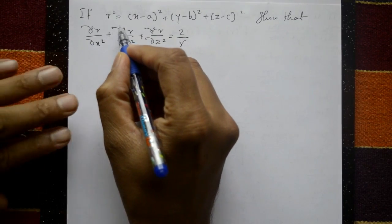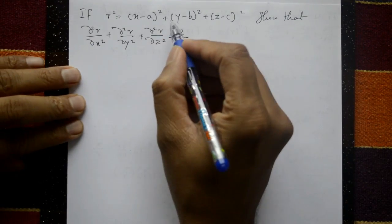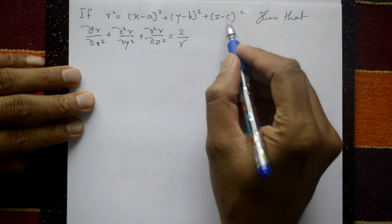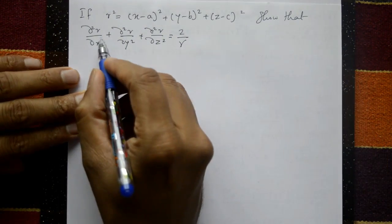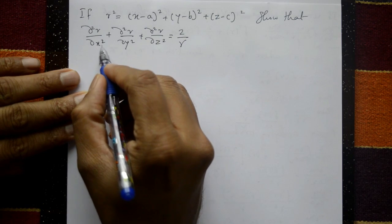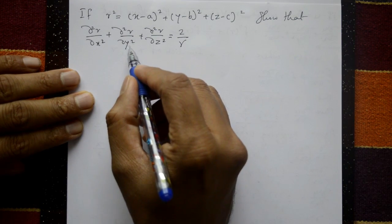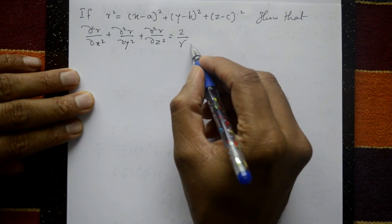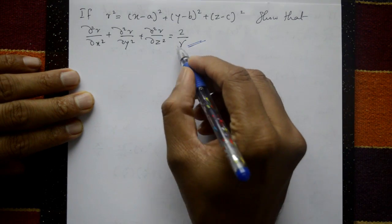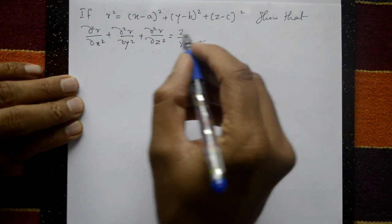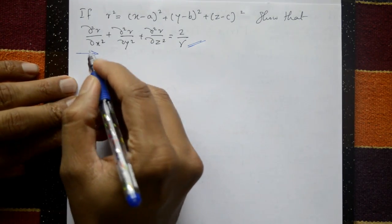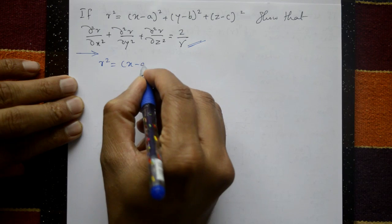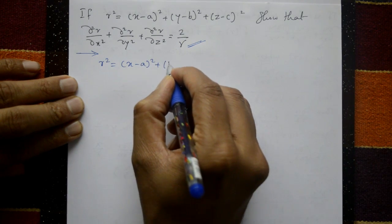Given r² = (x - a)² + (y - b)² + (z - c)², we need to show that ∂²r/∂x² + ∂²r/∂y² + ∂²r/∂z² = 2/r. The required right-hand side is 2/r.